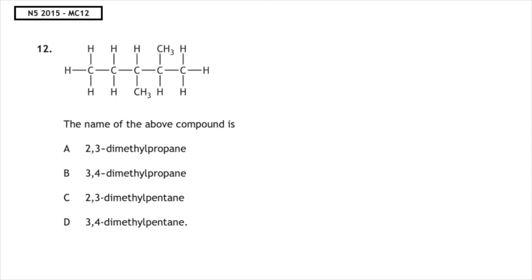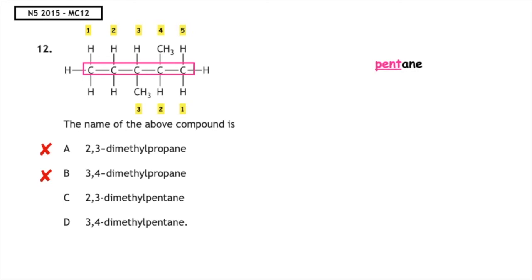This past paper question is from the National 5 2015 multiple choice question 12. The name of the above compound is? We find the longest carbon chain, which has five carbons, so that is pentane - meaning answer choices A and B cannot be correct as they suggest propane, which would only indicate three carbons. We number the top and bottom carbons and put boxes around the methyl branches. The position options are 3, 4 or 2 and 3. The lowest numbers are 2 and 3, so the compound is known as 2,3-dimethylpentane.